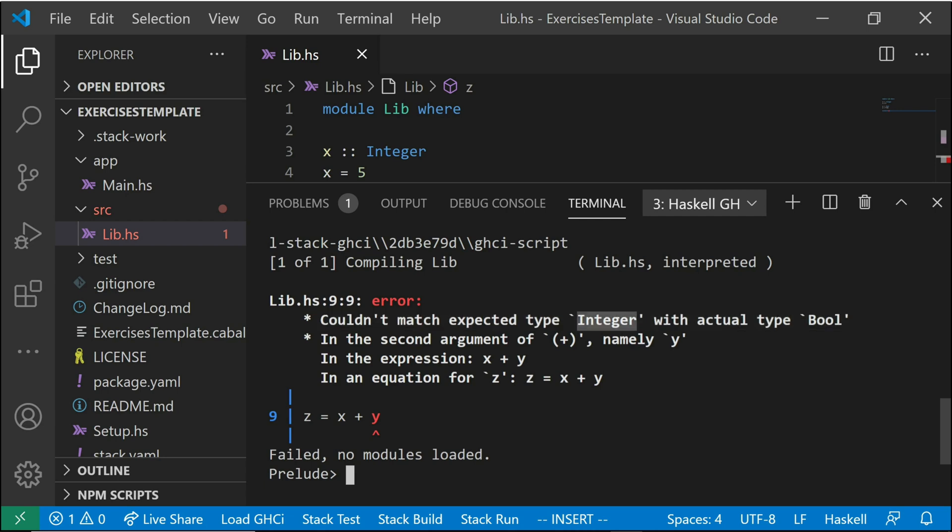We have an error here. Couldn't match expected type integer with actual type bool. So we had an error caused from the plus and it was saying, this Y here, I wanted it to be an integer. I expected it to be an integer. Why? Because X is an integer here. I expected it to be the same thing as X. If I'm going to add two things together and the first thing is an integer, the second thing should also be an integer, but the actual type is bool. Y is actually bool. So you'll see whenever dealing with type errors, it'll always kind of write it out this way. I expected it to be this, but it's actual type is this. And then it tells you what it's talking about exactly. So it says in the second argument of plus, namely Y. So it's saying I expected Y to be an integer, but it's actually a bool.